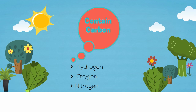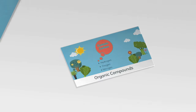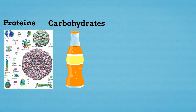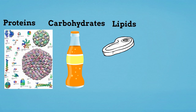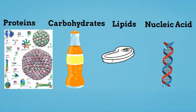These are called organic compounds. There are several important groups of organic compounds found in living things. They are proteins, carbohydrates like sugar, lipids which are fats, waxes, and nucleic acids such as DNA and RNA.